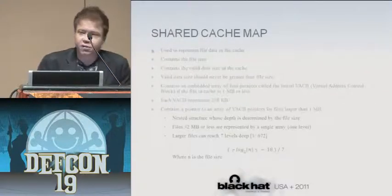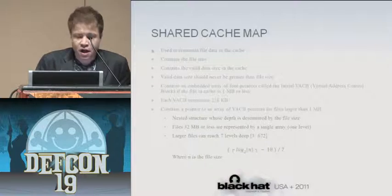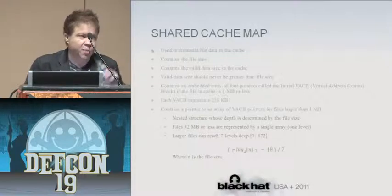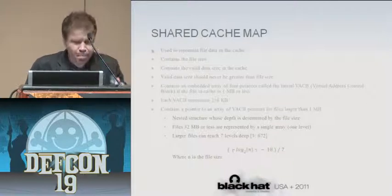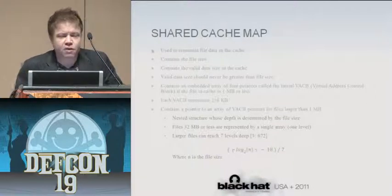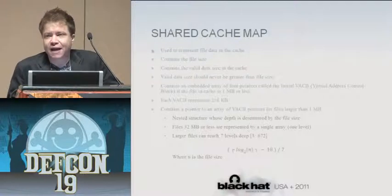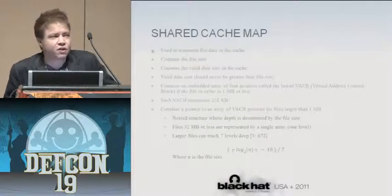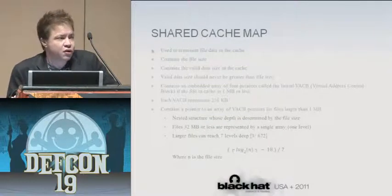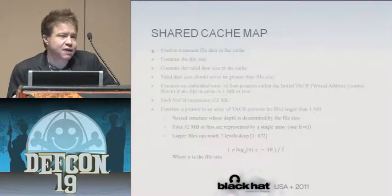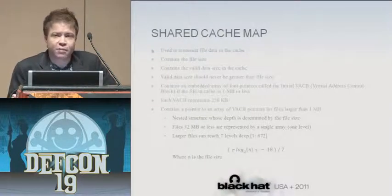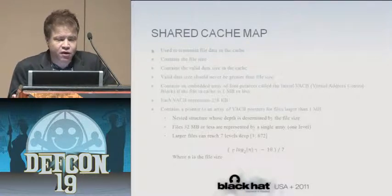We've covered image section objects and data section objects. The last thing is the shared cache map. The shared cache map represents file data in the cache. If you don't have an image section object or a data section object, you should parse the cache structures to get as much data as available — though that may be nothing, or it may be nearly the whole file.